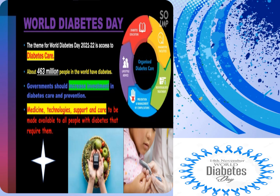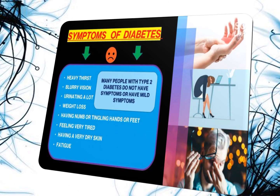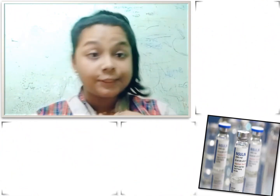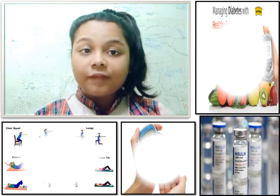Governments should increase investment in diabetes care and prevention, with medicine, technologies, support, and care made available to all people with diabetes. Symptoms of diabetes include heavy thirst, blurry vision, urinating a lot, weight loss, and having numb or tingling hands or feet.